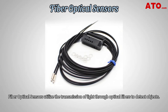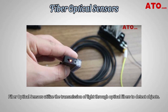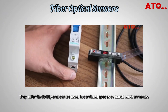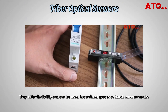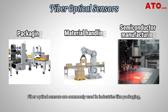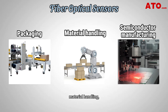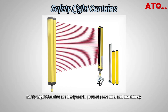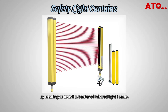Fiber optical sensors utilize the transmission of light through optical fibers to detect objects. They offer flexibility and can be used in confined spaces or harsh environments. Fiber optical sensors are commonly used in industries like packaging, material handling and semiconductor manufacturing for presence detection, thickness measurement and color sensing.